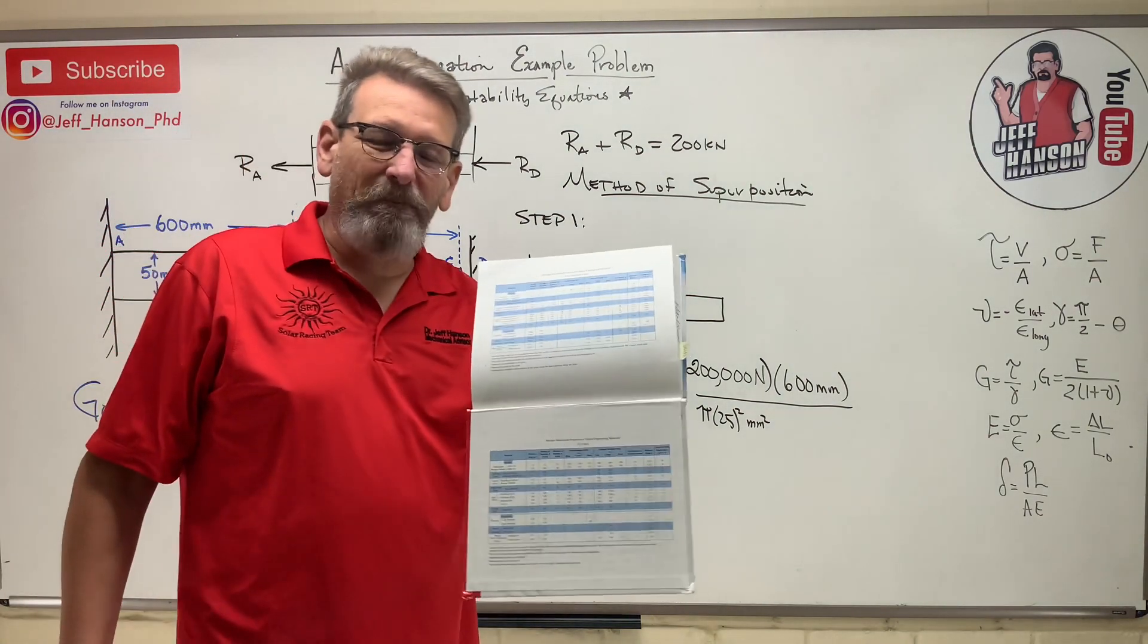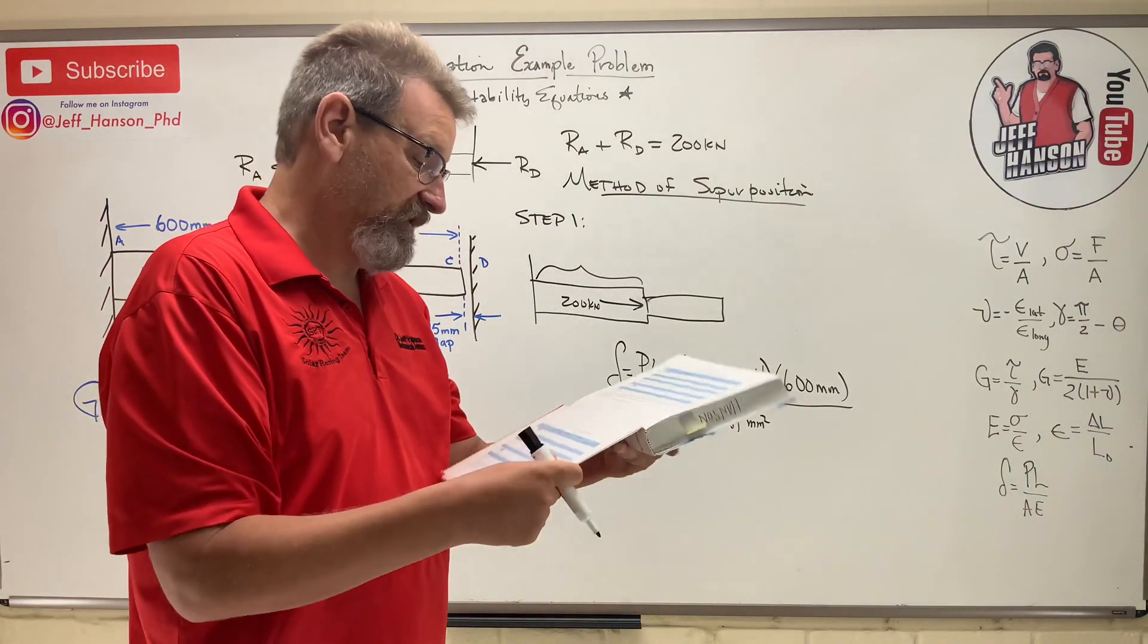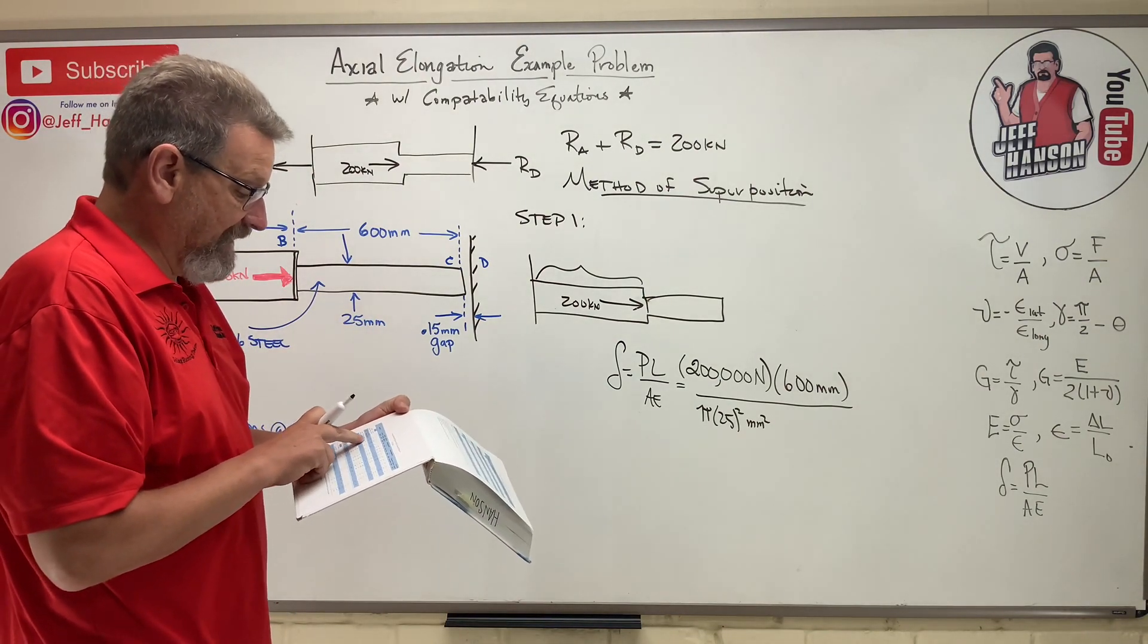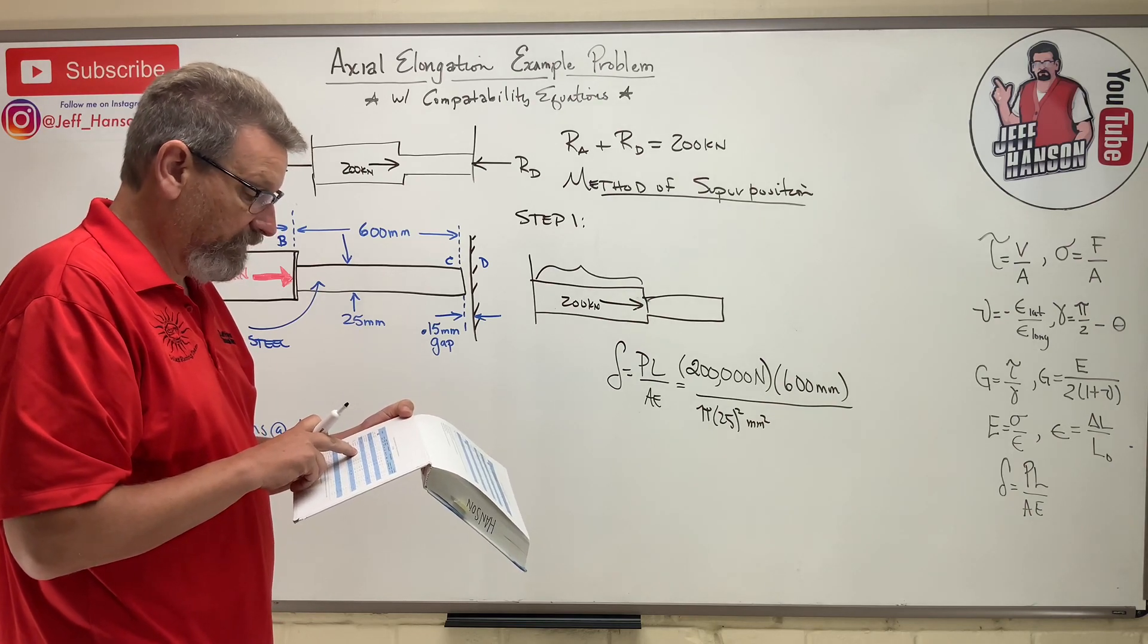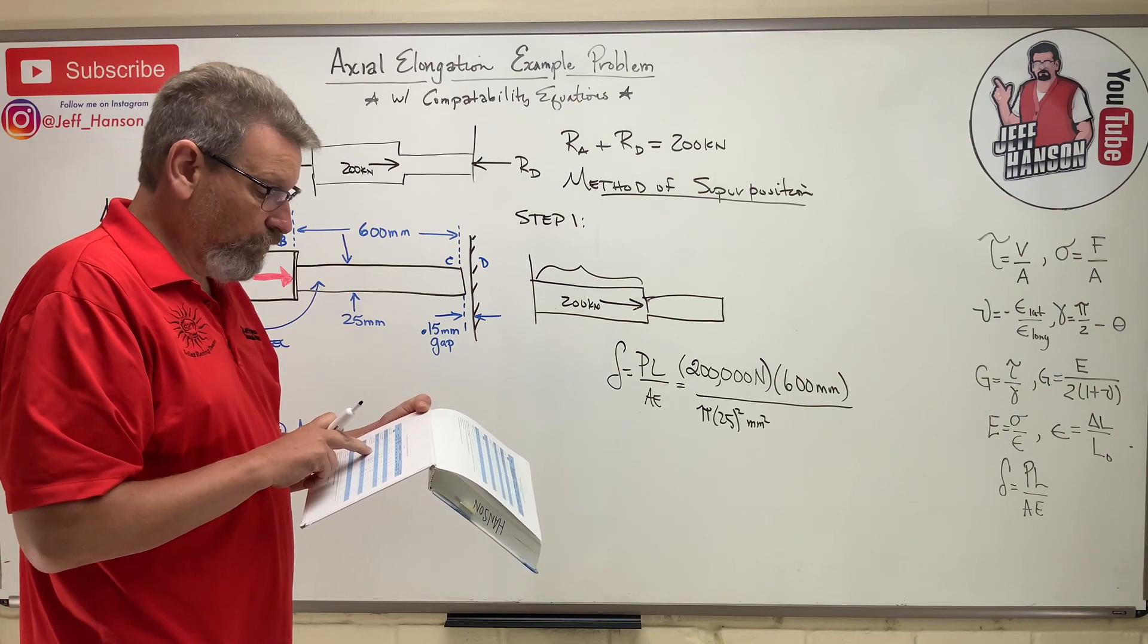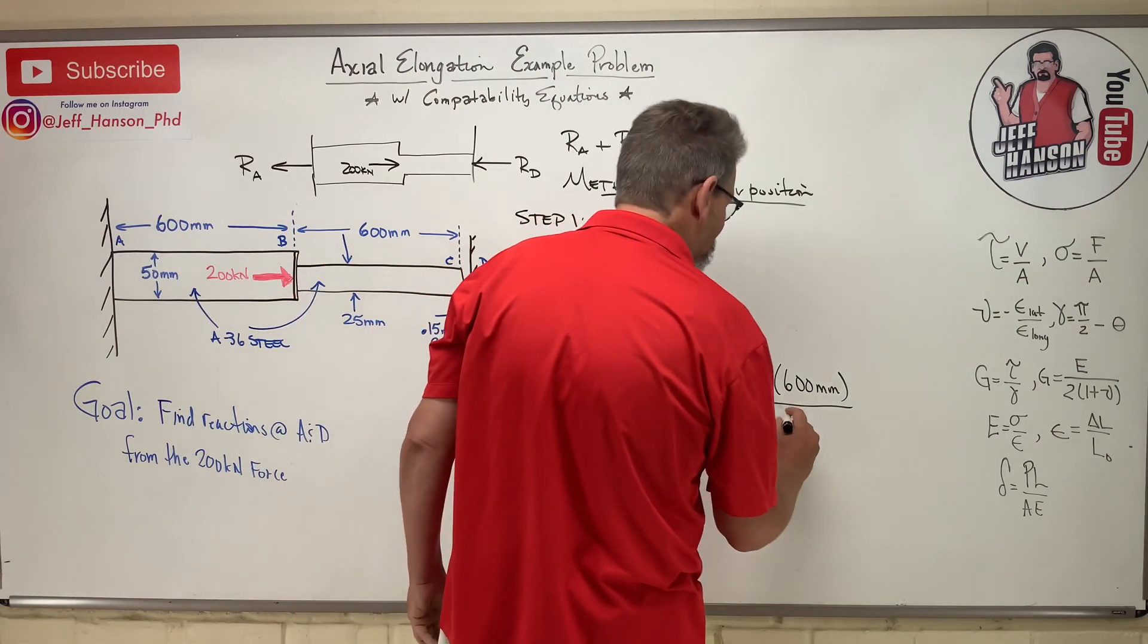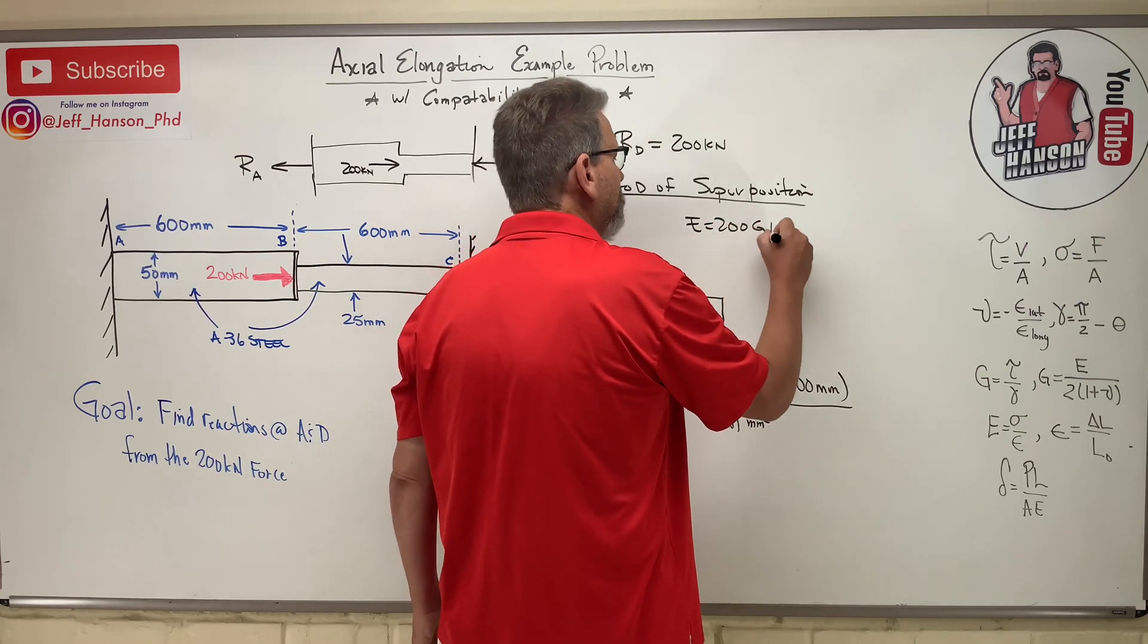All right, so I'm going to the table in the back of my book, and of course I want the metric table. Where is the metric? That's down here, isn't it? And for A36 steel, E is unknown. There it is. Modulus of elasticity, 200 gigapascals. 200 gigapascals. So E equals 200 GPa.